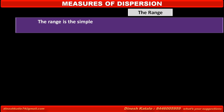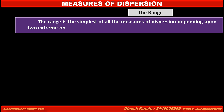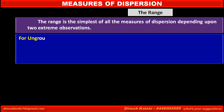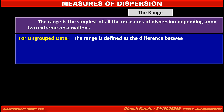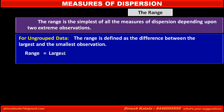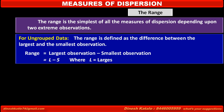Now see the range. The range is the simplest of all the measures of dispersion, depending upon two extreme observations. For ungrouped data, the range is defined as the difference between the largest and the smallest observation. Range is equal to largest observation minus smallest observation. In short, it is equal to L minus S, where L is equal to the largest observation and S is equal to the smallest observation.